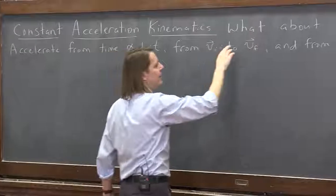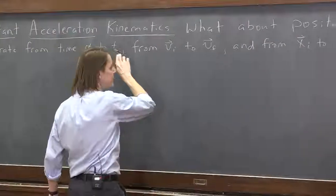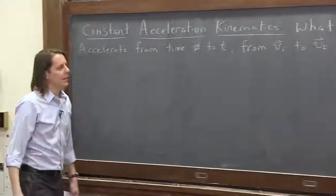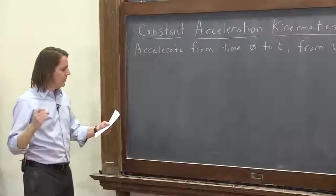So at time t equals 0, it's at vi and xi. At time t equals t, it's at vf and xf. That's the plan. So let's start like this.